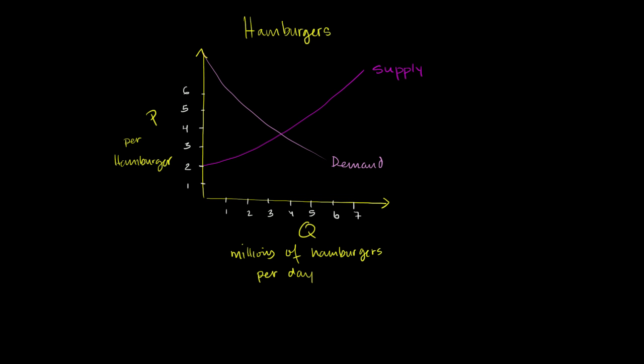In the last video on taxing hamburgers, I did a somewhat artificial thing where I taxed hamburgers with an absolute dollar amount. Typically, consumption taxes are a percentage of the actual price of the goods. So for example,